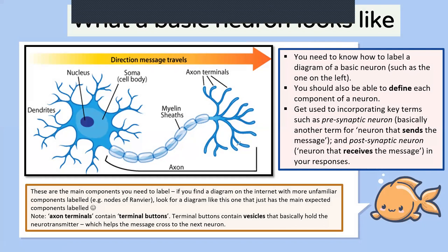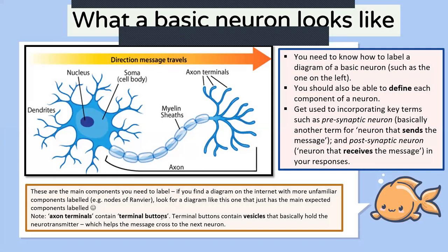Sometimes when you look at diagrams of neurons online or type 'image of a neuron' into Google, you'll come across other terminologies like nodes of Ranvier or Schwann cells. You can just ignore those — they are not examinable as per your study design, so you will not be required to know about them. Don't worry about those; do focus on the main components listed in this diagram.